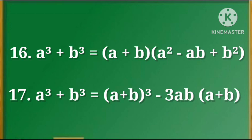16. a cube plus b cube is equal to (a plus b) into (a square minus ab plus b square). 17. a cube plus b cube is equal to (a plus b) whole cube minus 3ab into (a plus b).